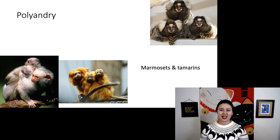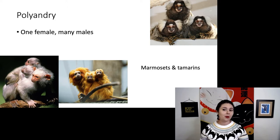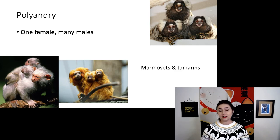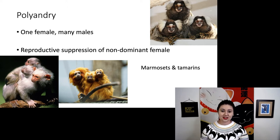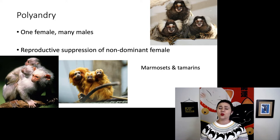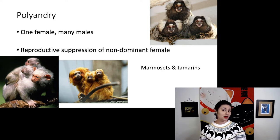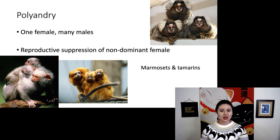Now let's talk about polyandry, which is different from what we see in most mammals. Here we have one female but many males. We see this in marmosets and tamarins, and there may be other adult females in the group, but we see reproductive suppression of the non-dominant female. In these species, females generally give birth to twins, and the babies are super small but very large compared to mom — that's a lot of work. Having multiple males, specifically two, is very helpful because each dad can take one baby, and mom is free to eat as much as she can so she has enough milk to lactate for both babies.